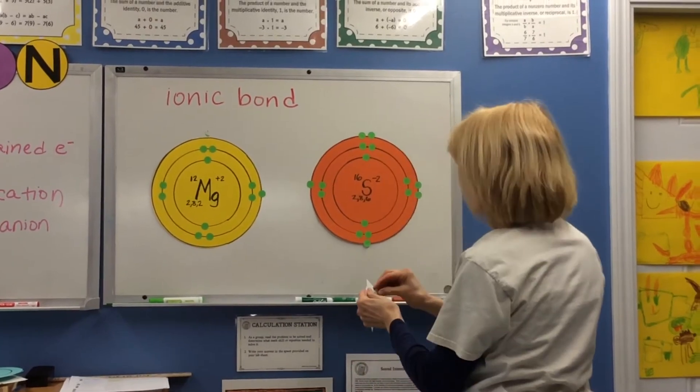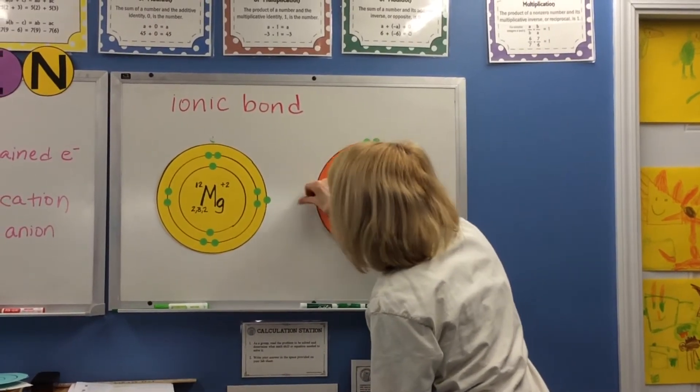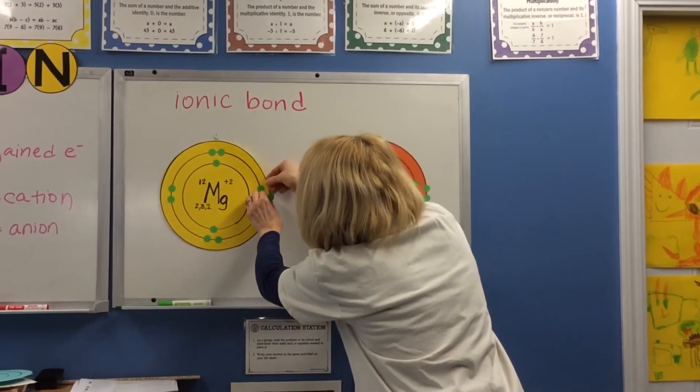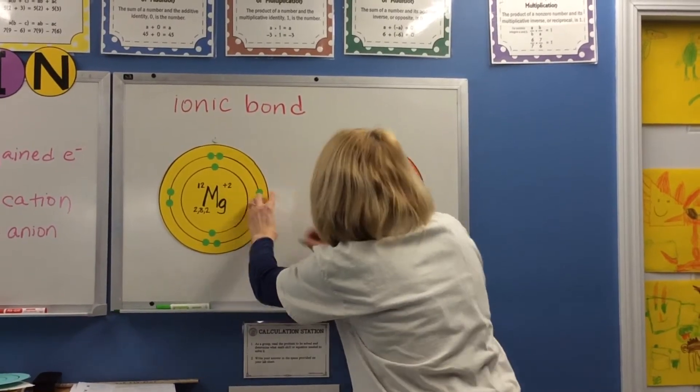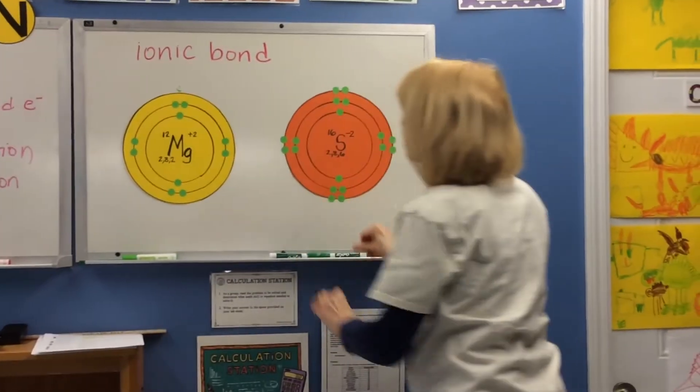Magnesium is going to give 2 of its electrons to sulfur.